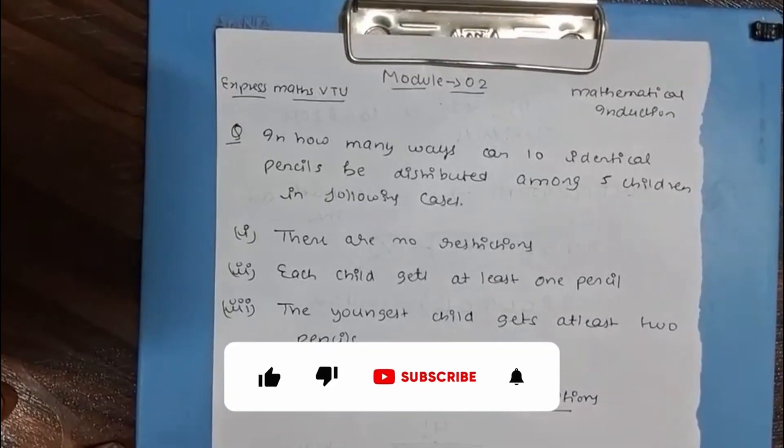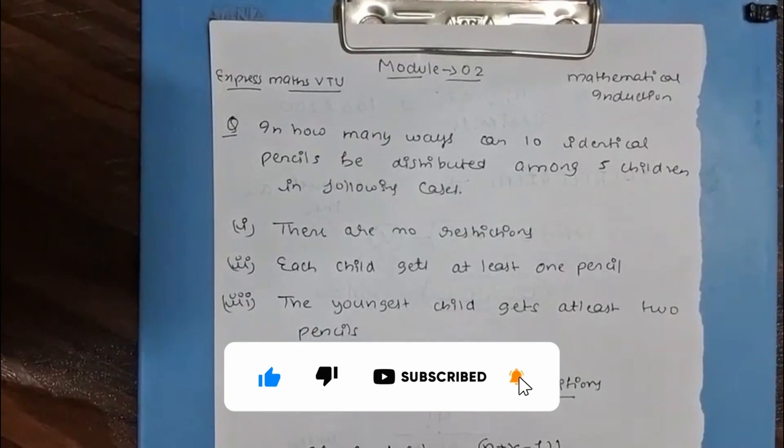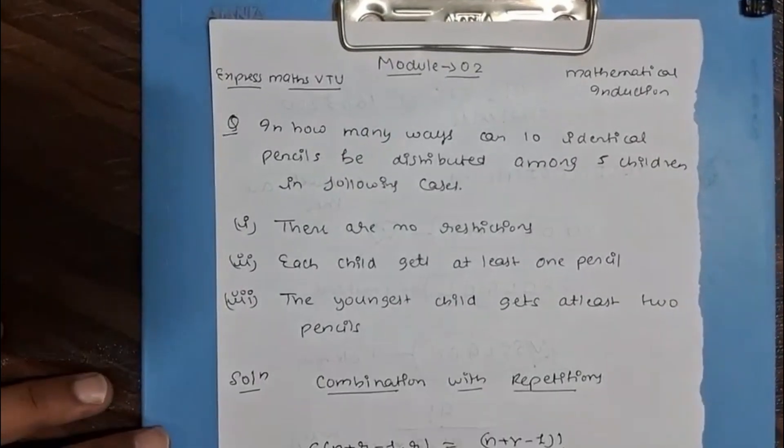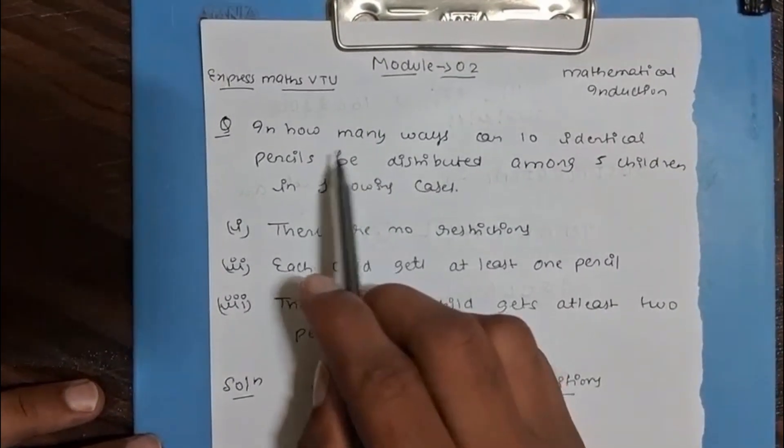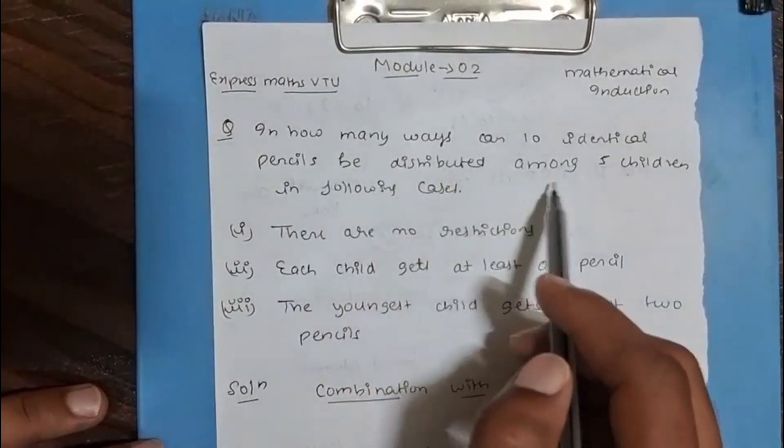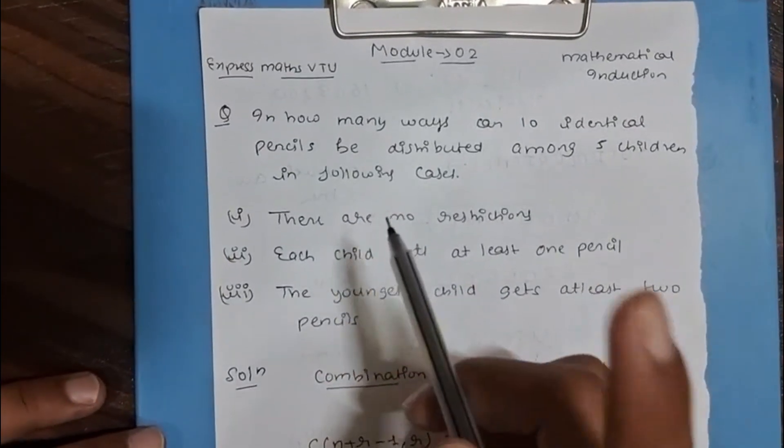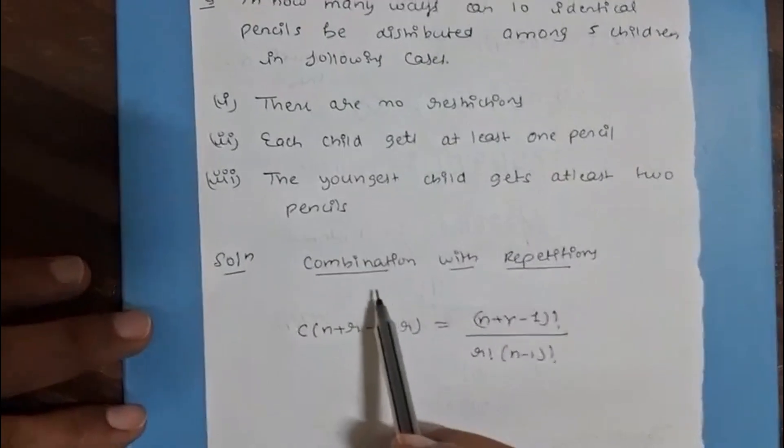Hi everyone, today we are going to solve another problem from Module 2 which may be asked in video examination as well as your internal exams. The question is: in how many ways can 10 identical pencils be distributed among five children in the following cases? While solving this question, we have to remember one formula: the formula is combination with repetition.